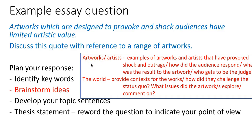You need to identify your artworks and artists, and examples of their work that have provoked shock and outrage. How did the audience respond? What was the result to the artwork — did it get vandalized, destroyed, removed, given back to the artist, or some other form of censorship? And who got to be the judge — was it the general public, the curators, or the critics? Your brainstorm should also include aspects of the world in terms of the context in which the works were created.